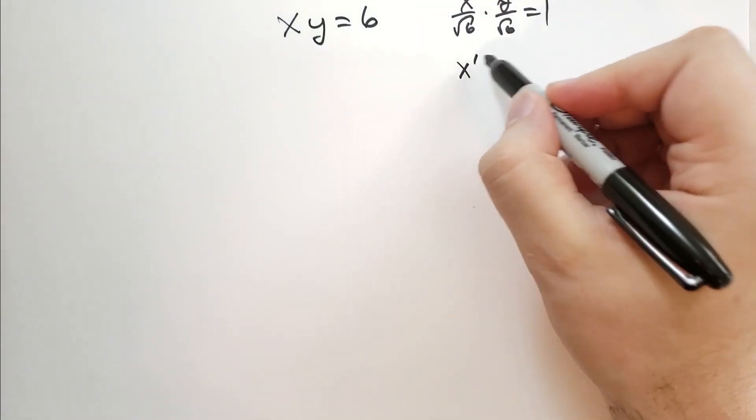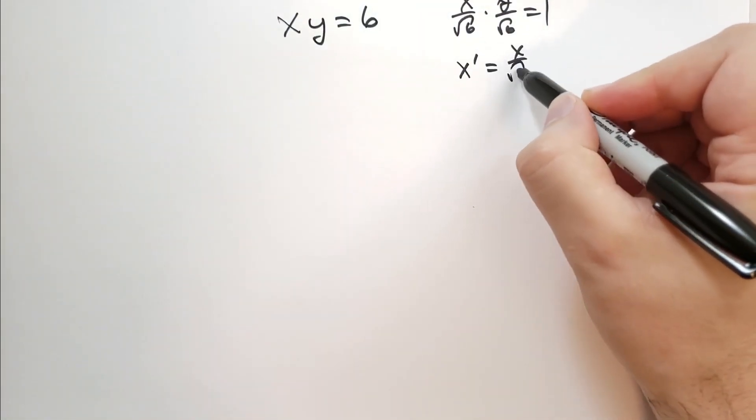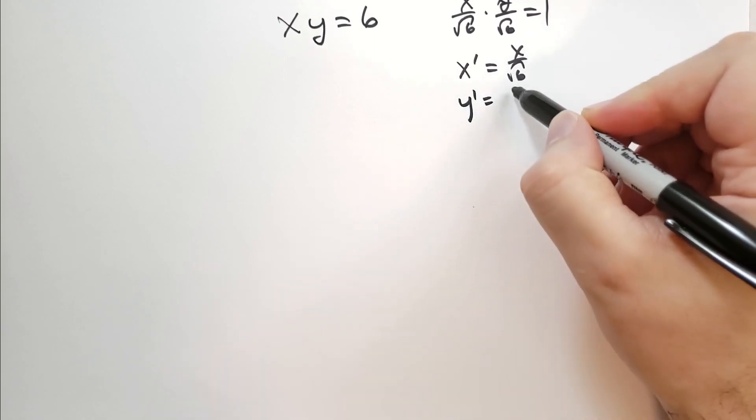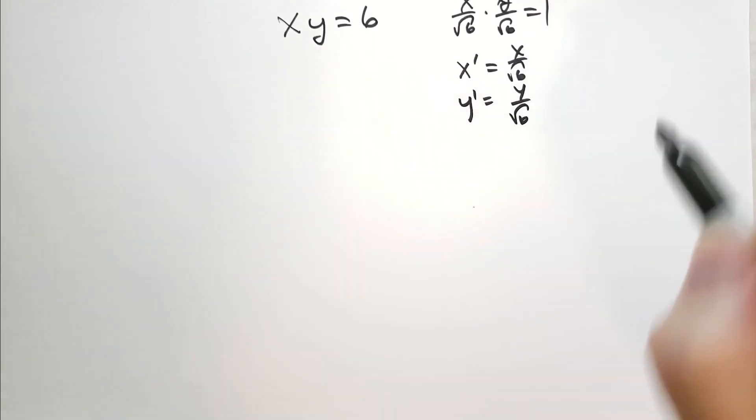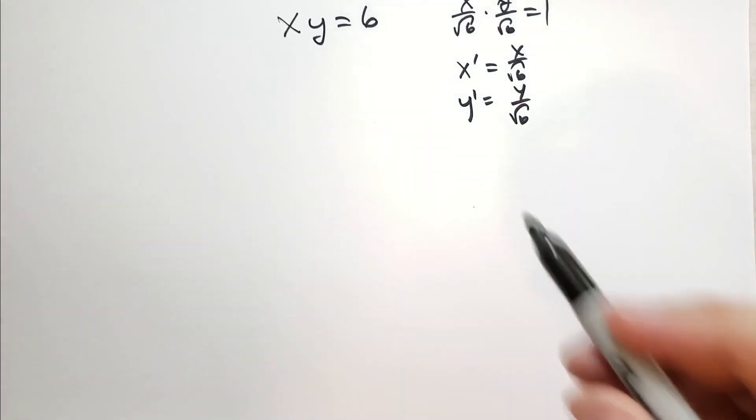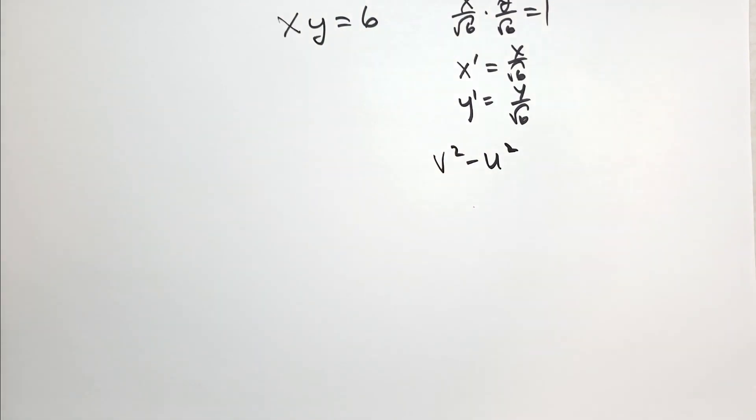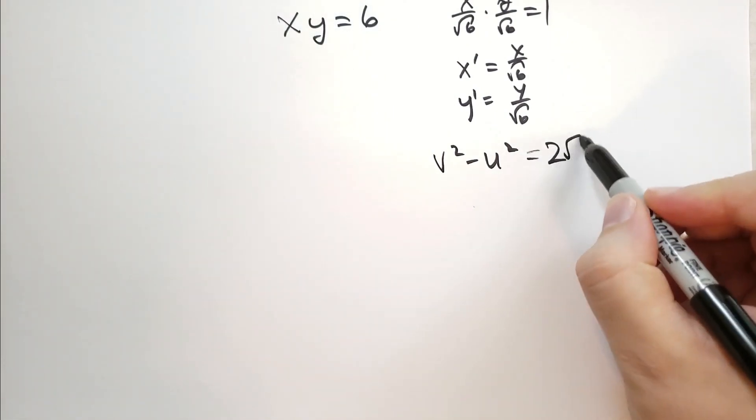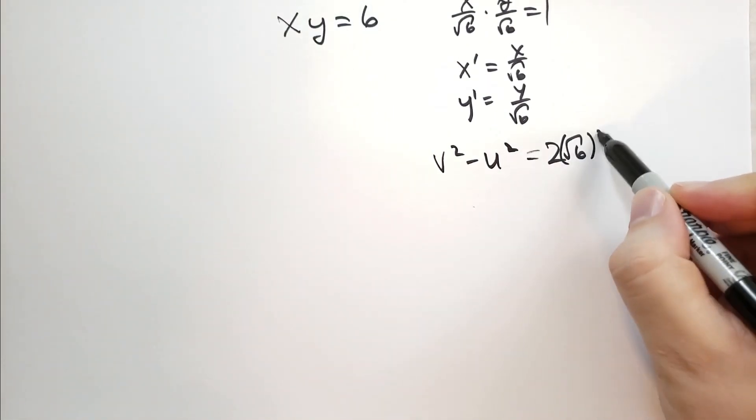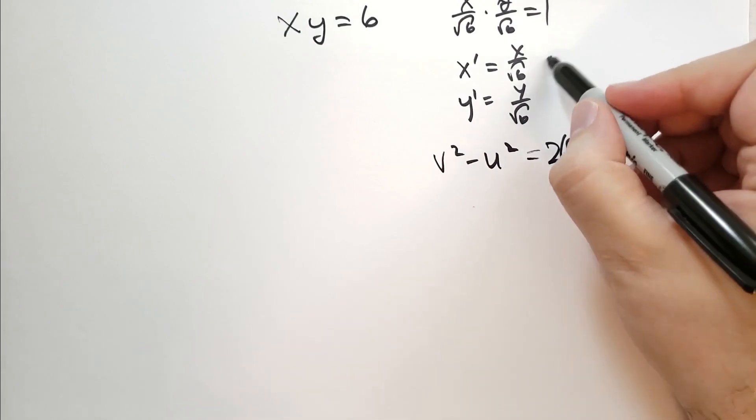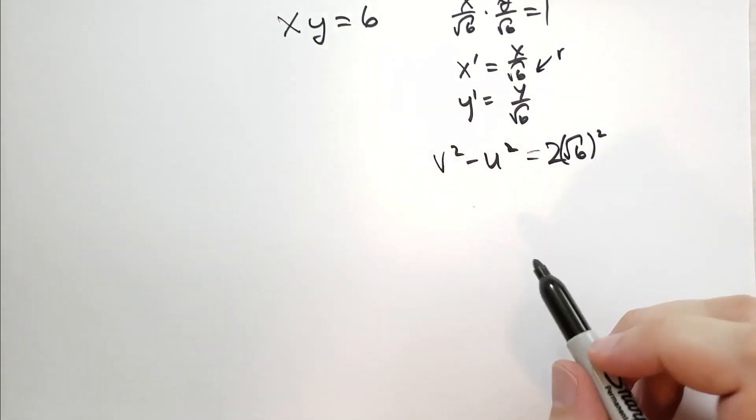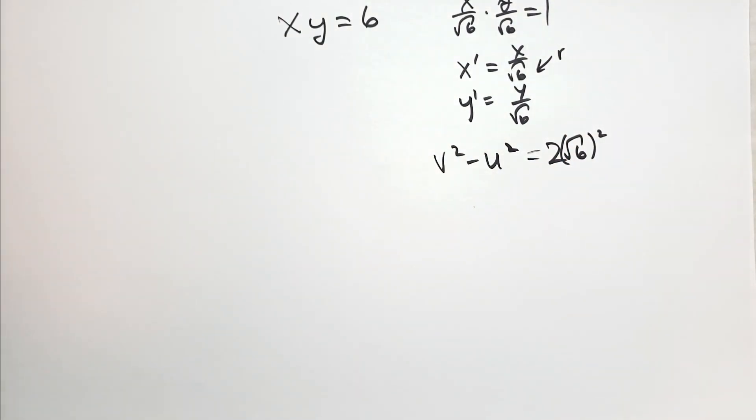And then we just take x prime is equal to x over square root of 6. And y prime is equal to y over square root of 6. And then we can proceed as follows. And we will get the equation v squared minus u squared is equal to 2 times the root of 6 squared. So he would call this factor r, like a scaling factor. And that is what you would get after you did that.